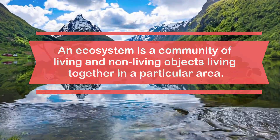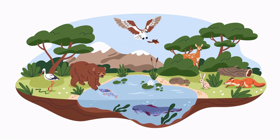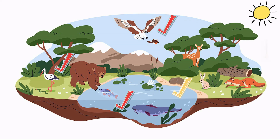Let's look at a cartoon example. In this ecosystem, you have the biotic factors, which include the hawk, the bear, the fish, and all of the other living organisms, along with the abiotic factors, such as the water, the amount of sunlight, and the temperature. All of these factors interact in order to make a community.